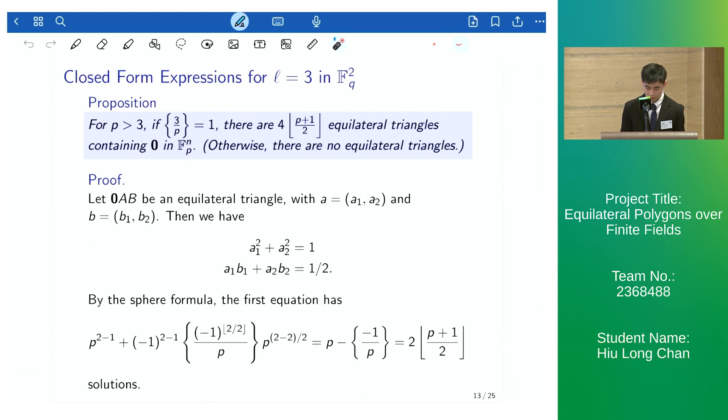We have the following proposition for triangles in the plane. If 3 is a square mod p, there are 4 times (p+1)/2 or 4 equilateral triangles containing the origin in the plane. Otherwise, there are no equilateral triangles.